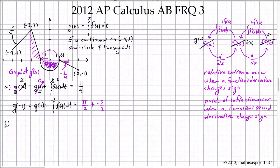Part B asks us to find G prime of negative 3 and G double prime of negative 3. We've already ascertained that G prime of negative 3 is nothing more nor less than F. At negative 3, F has a height of 2, so G prime of negative 3 equals 2, reading directly from the graph.